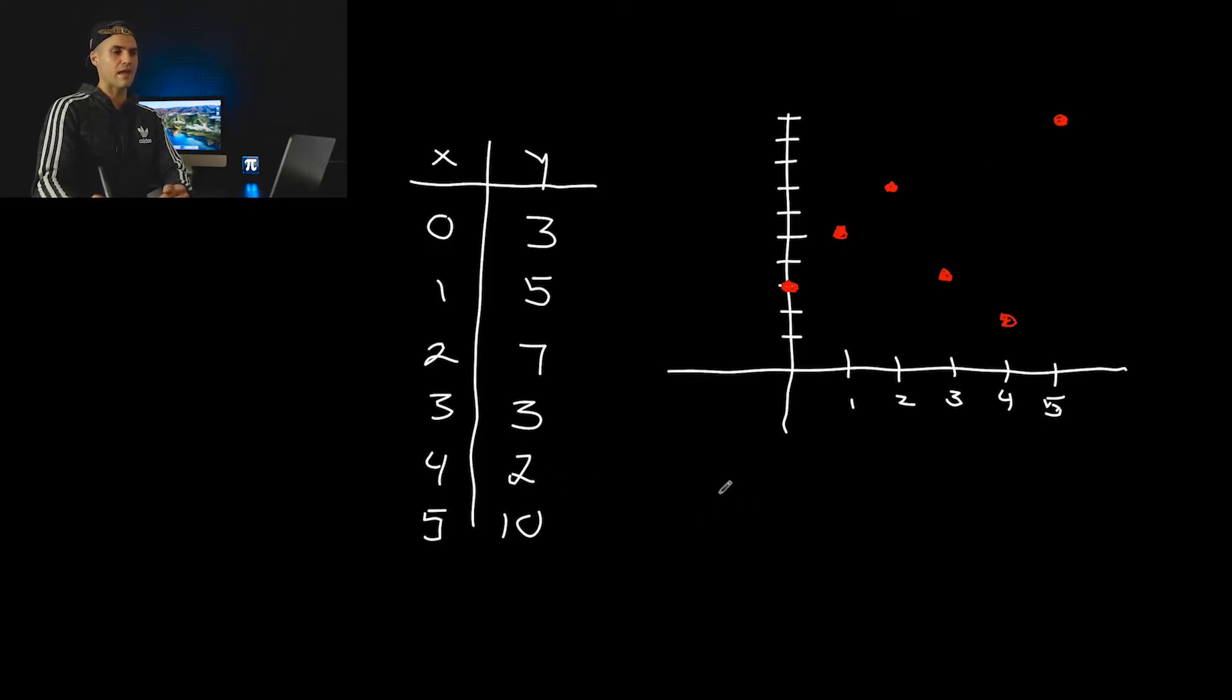Now with a domain, when you're stating the domain for just a particular set of points, all you have to do is basically state the x values from lowest to highest. And then you can't repeat any, if any do repeat. So notice that with the domain, this one's pretty nice because the x values are already in order for us. So zero, one, two, three, four, five.